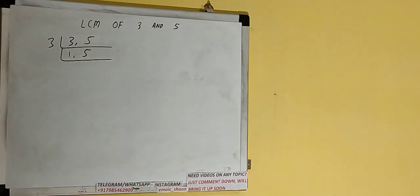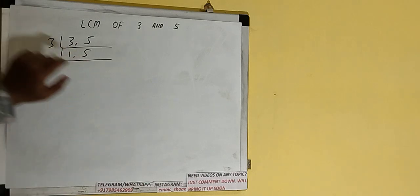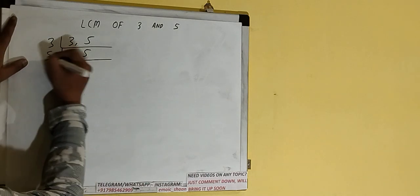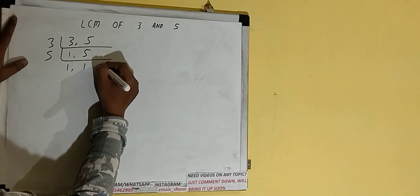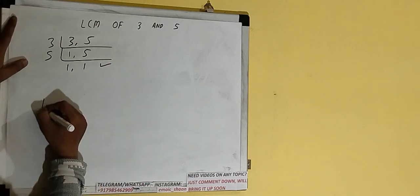So we'll check with the next lowest prime number that is 5. The second digit is divisible by 5, so divide and we'll be having 1 comma 1. Once we get that, we need to stop and do one last thing.